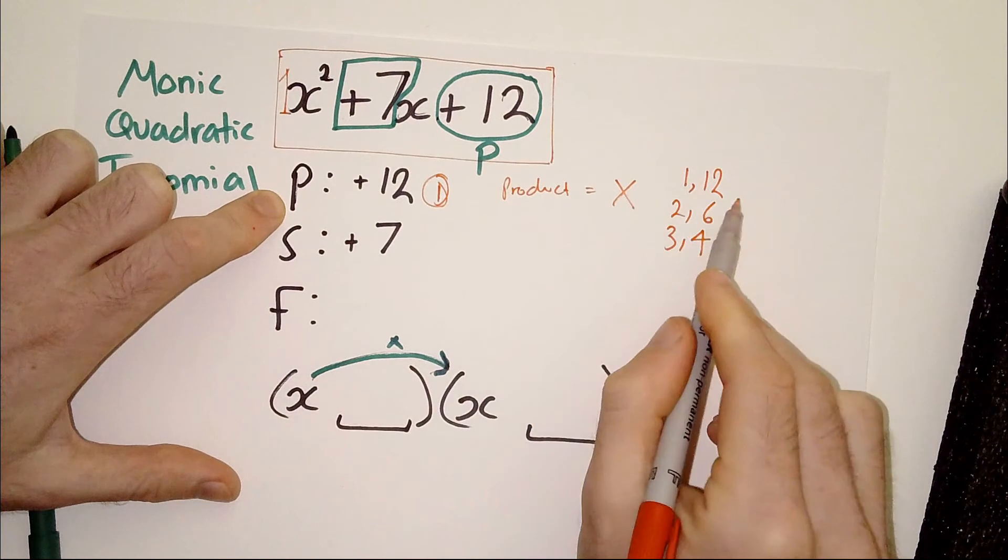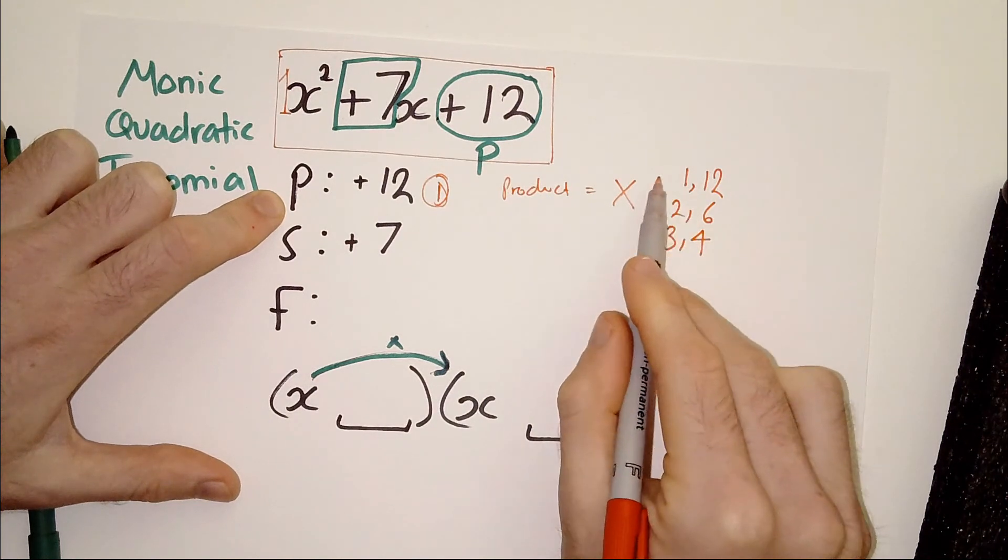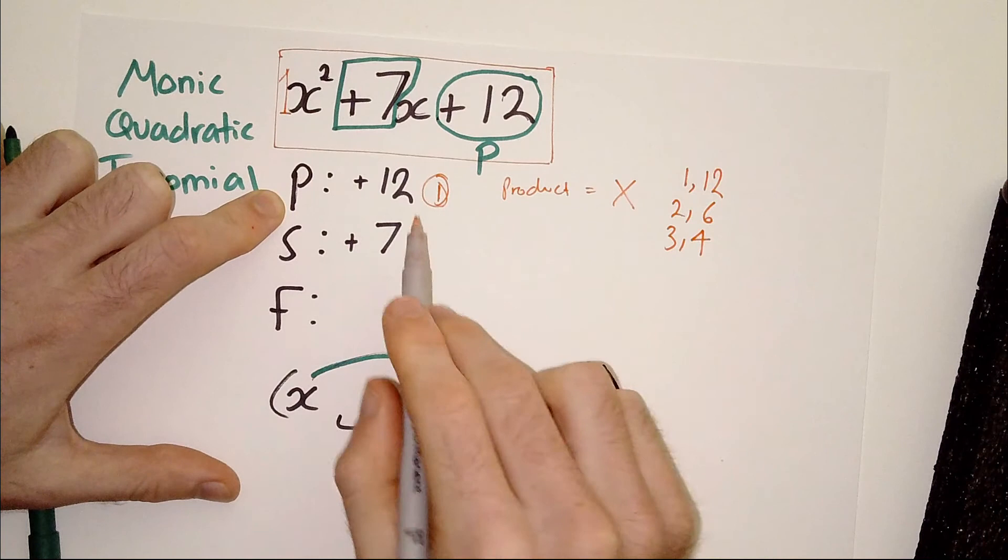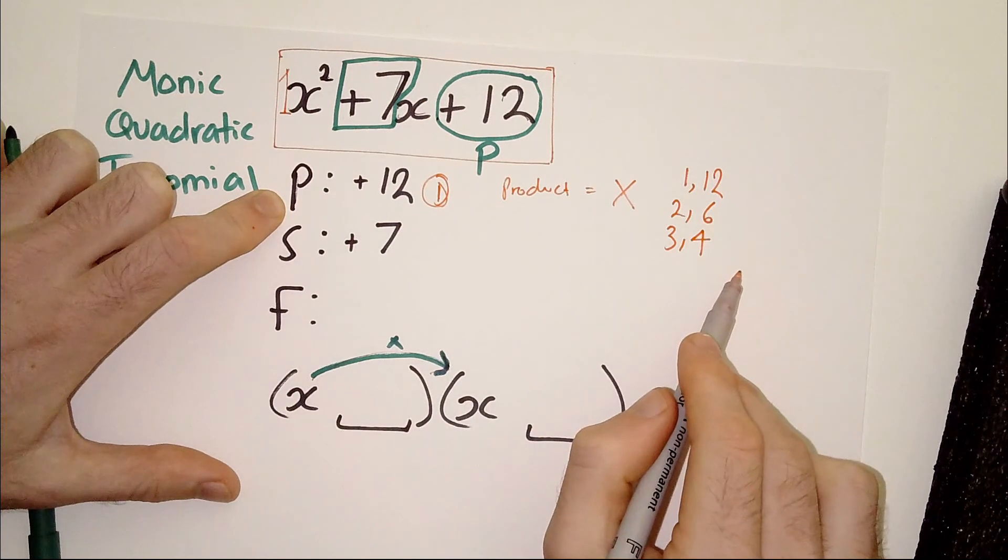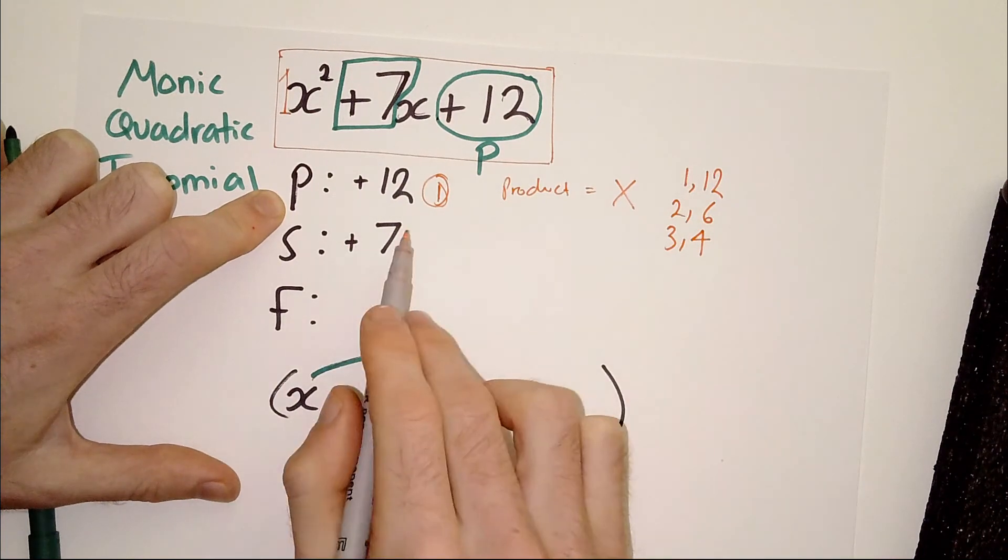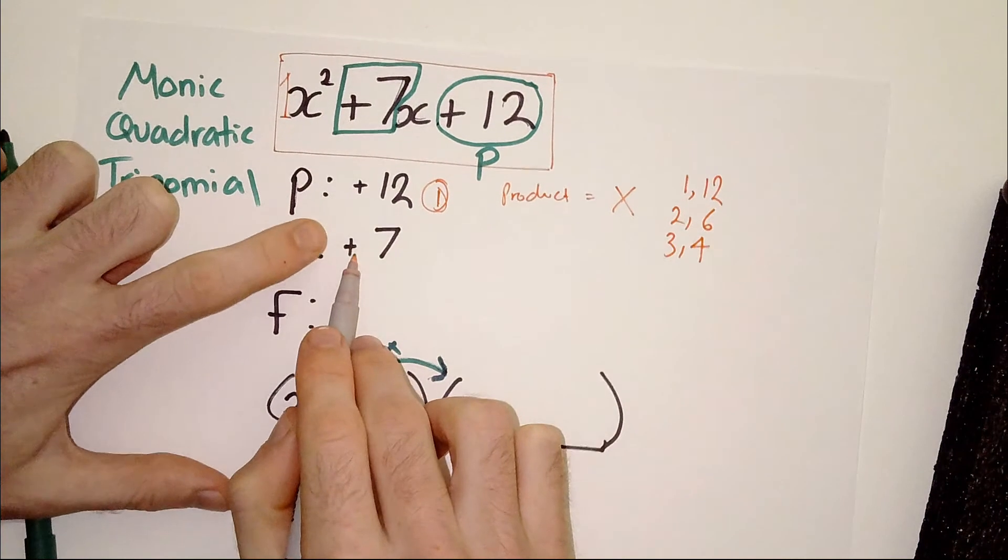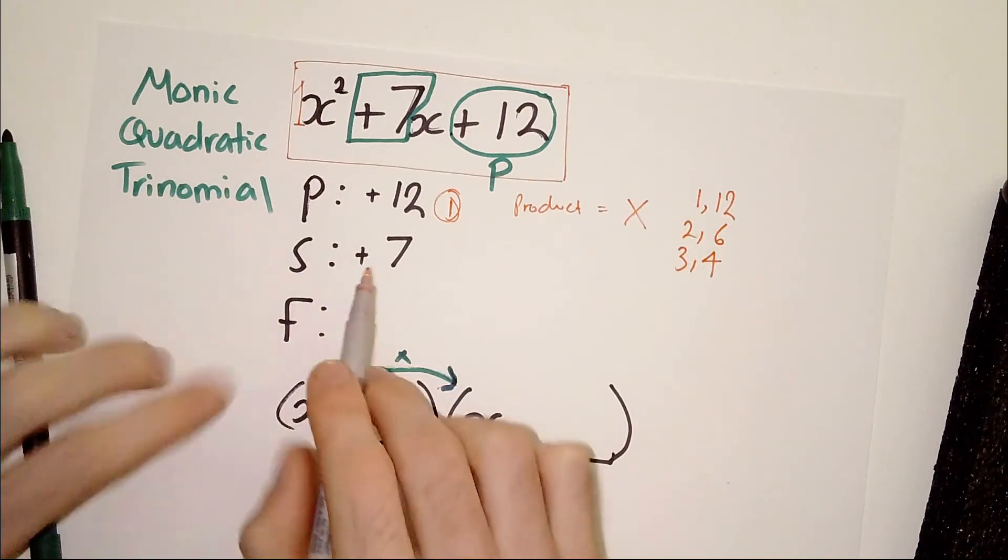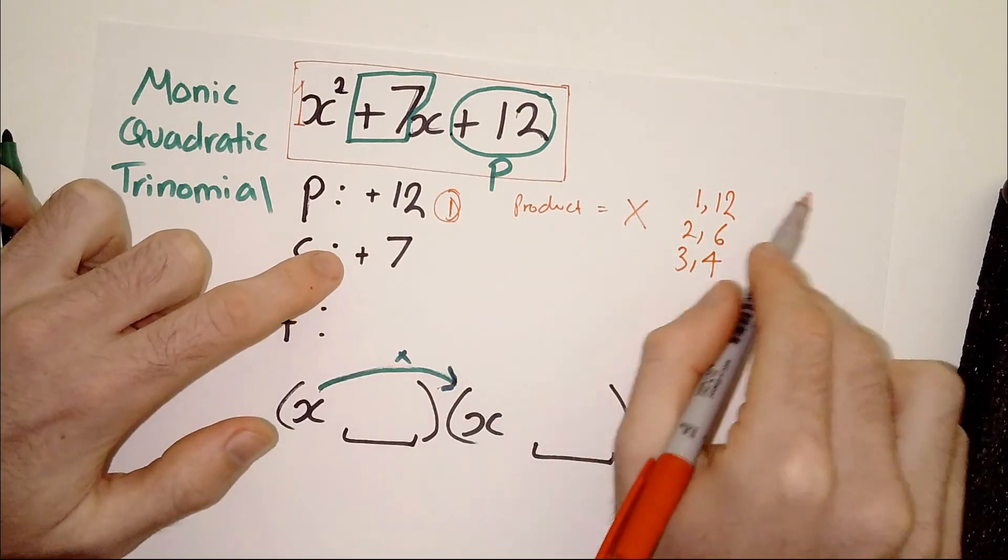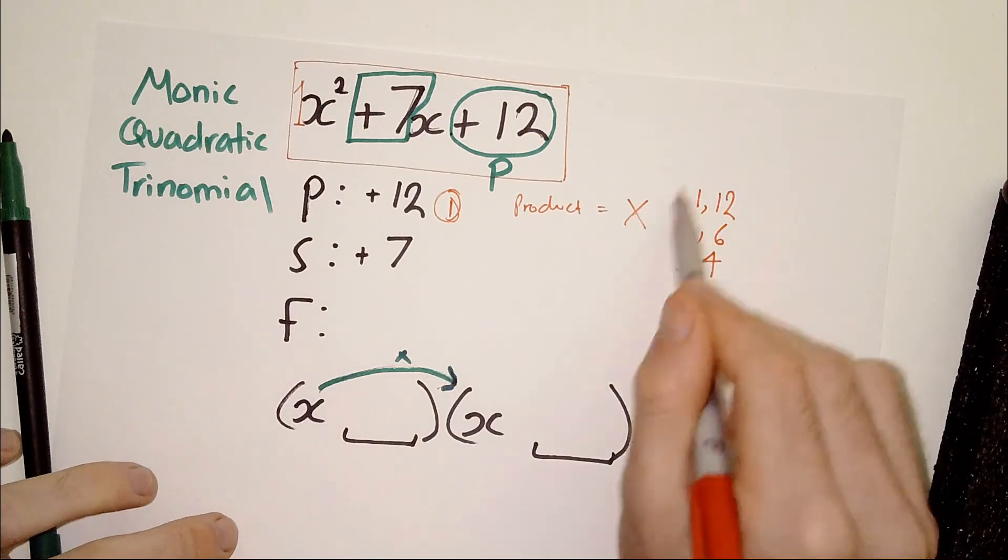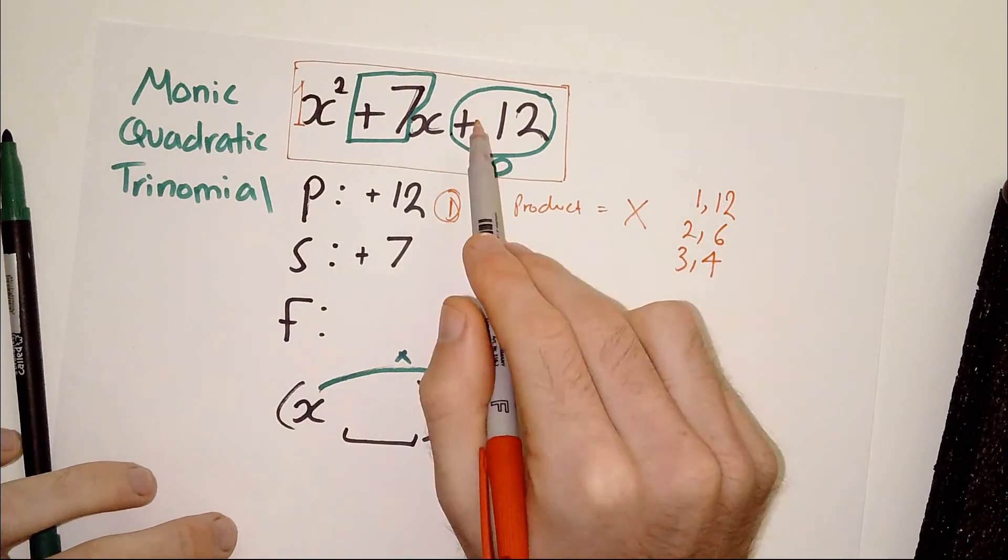There's also the negative variations of this. For instance, negative one times negative 12 equals positive 12. You'll see why I'm not going to write those down in this case, but you should be wary of that. The reason I don't worry about that in this case is because the sum has to be positive. So, when the sum is positive, you don't have to worry about the negative, negative variations, okay? But we know there are three positive combinations here that could multiply to 12.